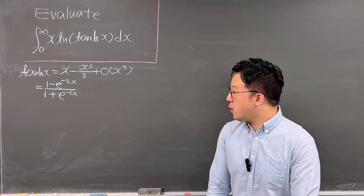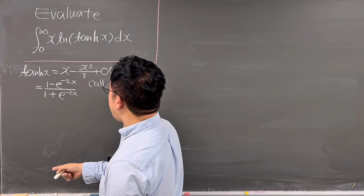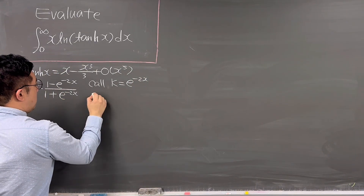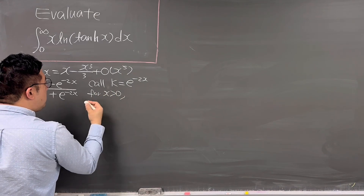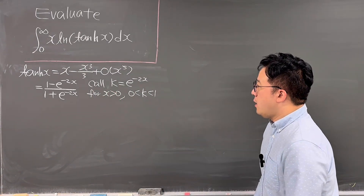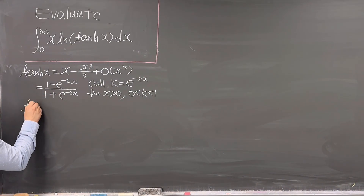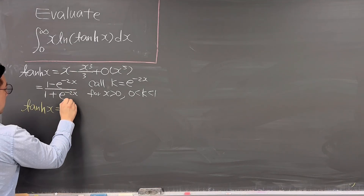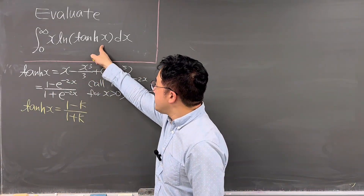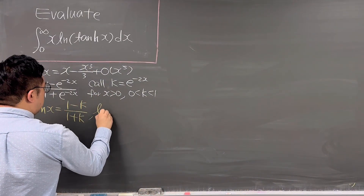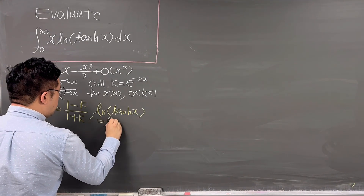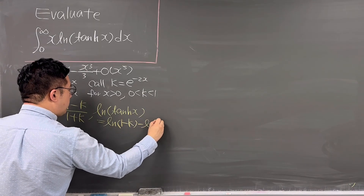Let me make a substitution. Let k equal e to the power of negative 2x. For x greater than 0, k has to be between 0 and 1. Then we can represent tanh x as 1 minus k over 1 plus k. Using this, we can represent ln(tanh x) as ln(1 minus k) minus ln(1 plus k).